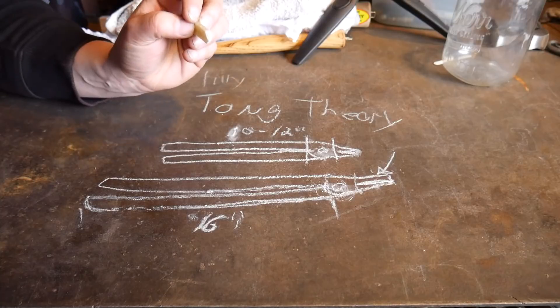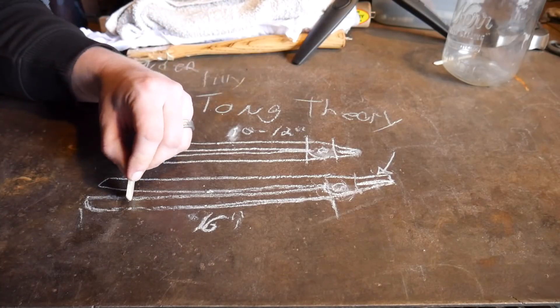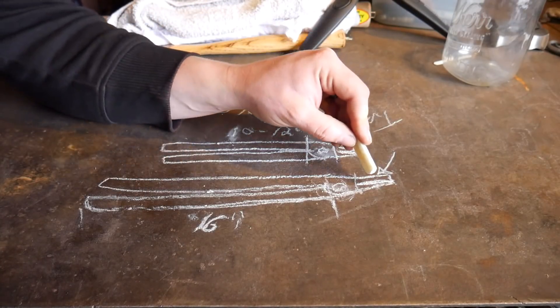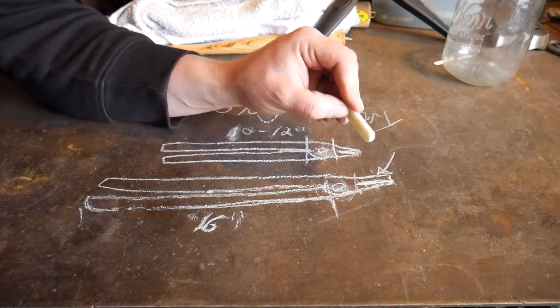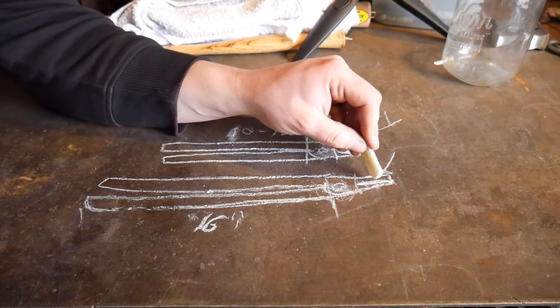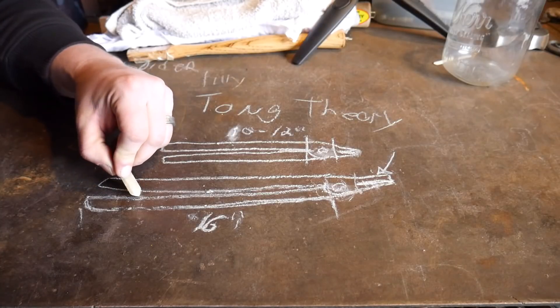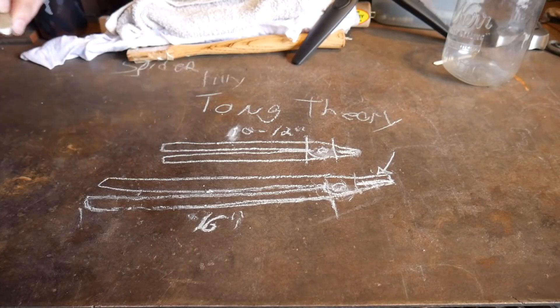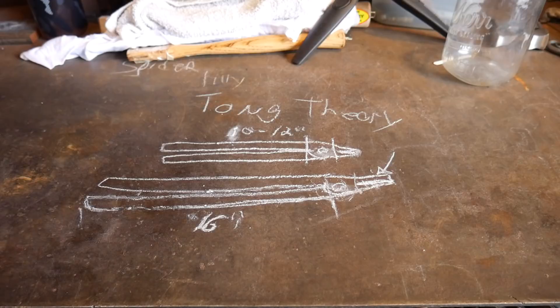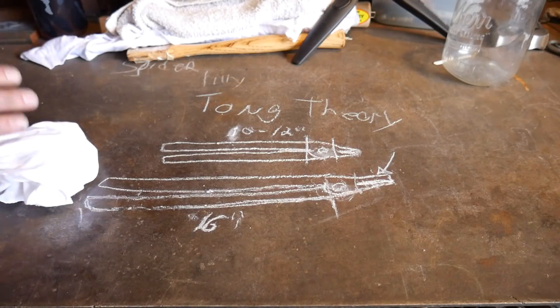But the reason why I like the long tong handles is that they apply more mechanical force on the jaws, which allows me to get a better gripping power on the jaws with less effort out here on the end. Because tongs are nothing more than one big lever. So let me go ahead and show that out.